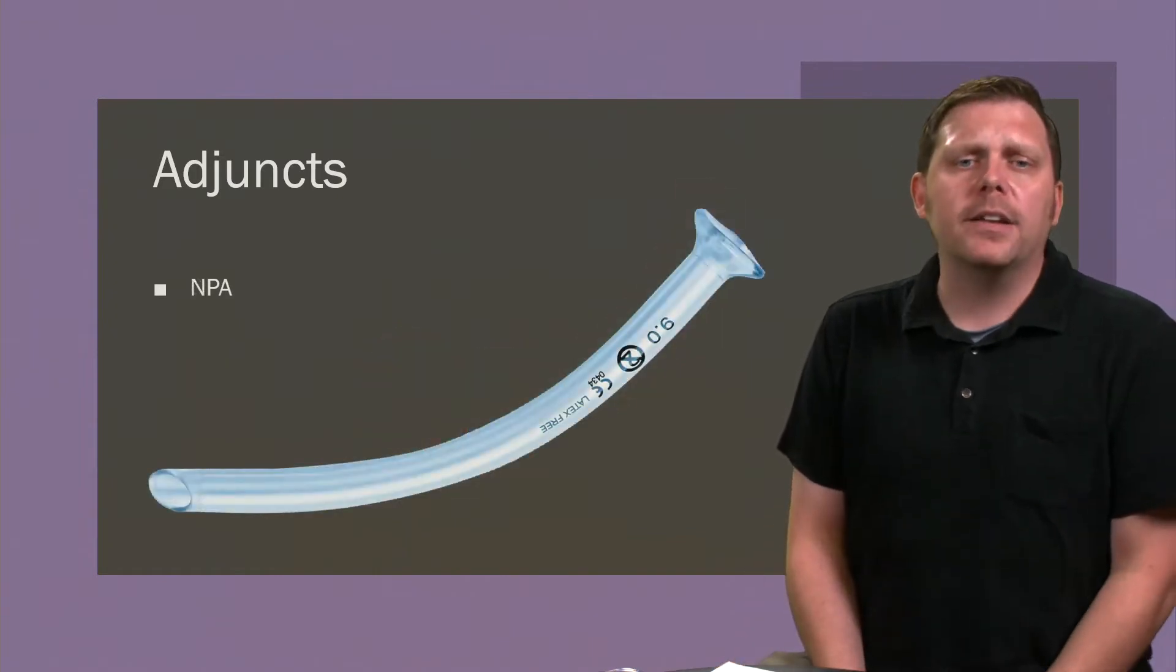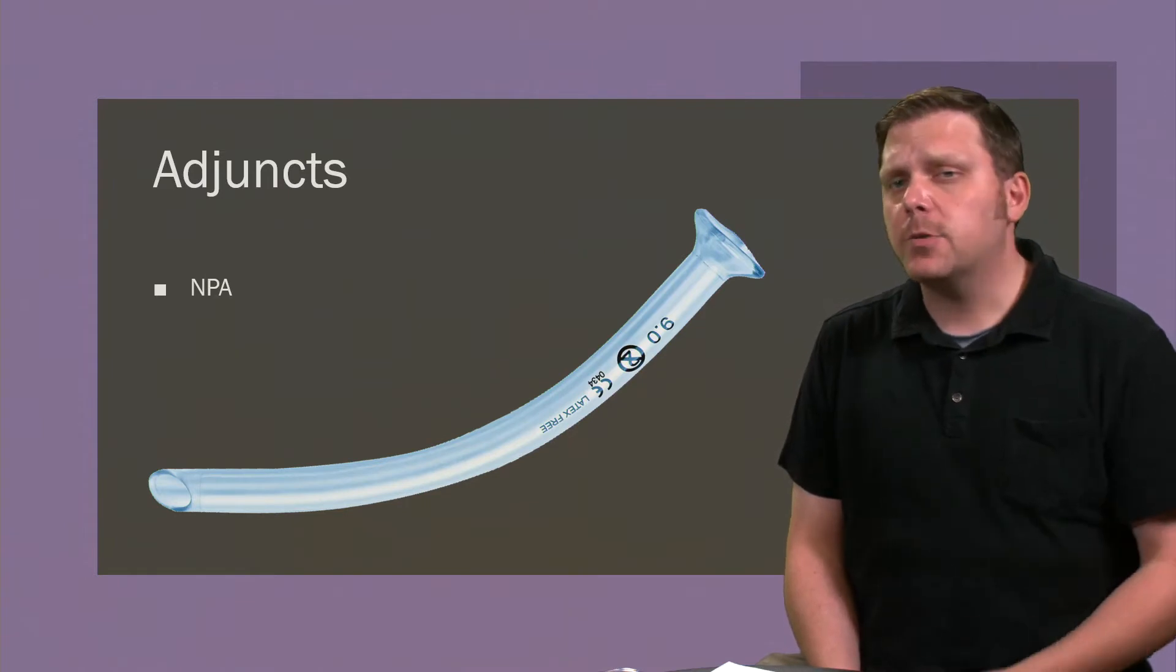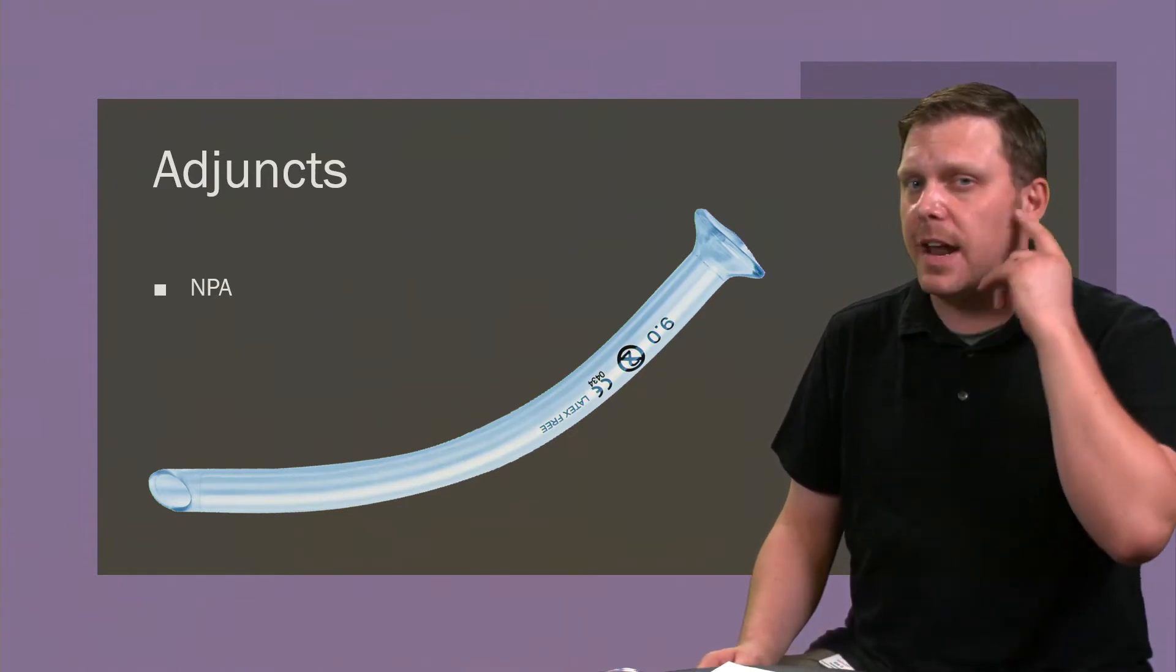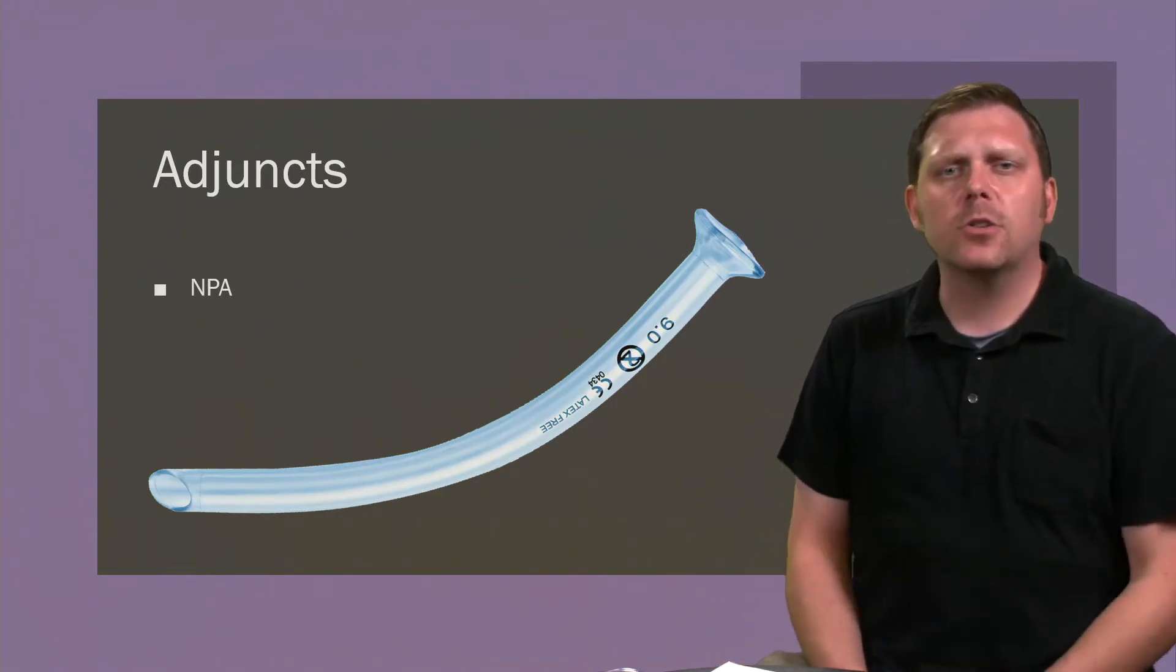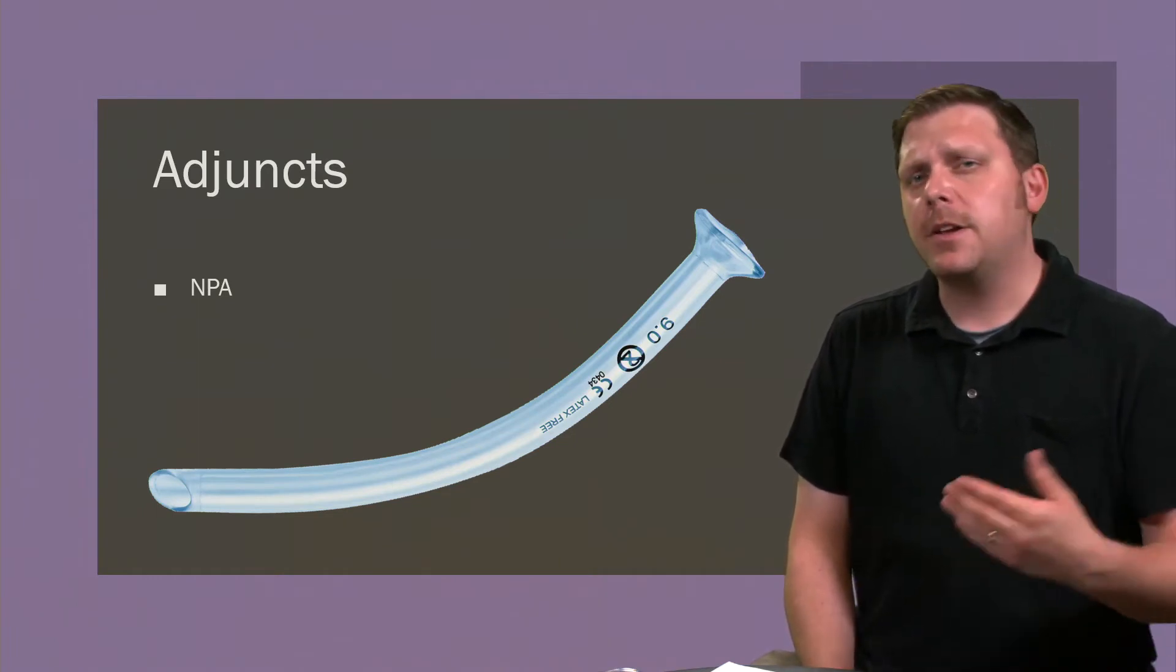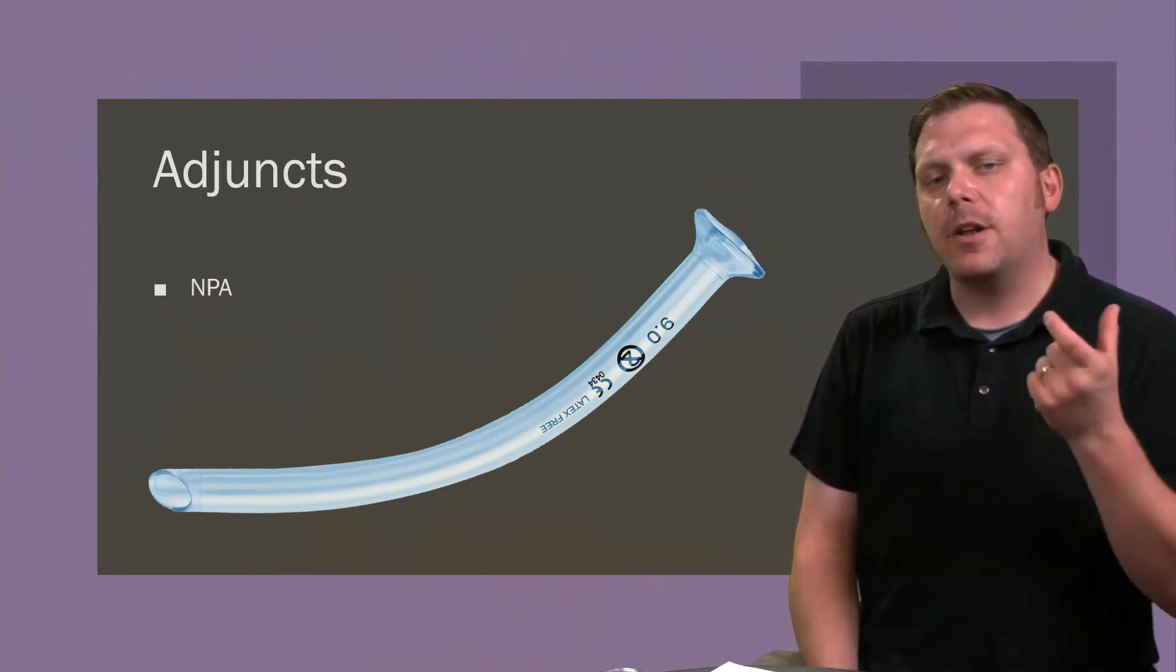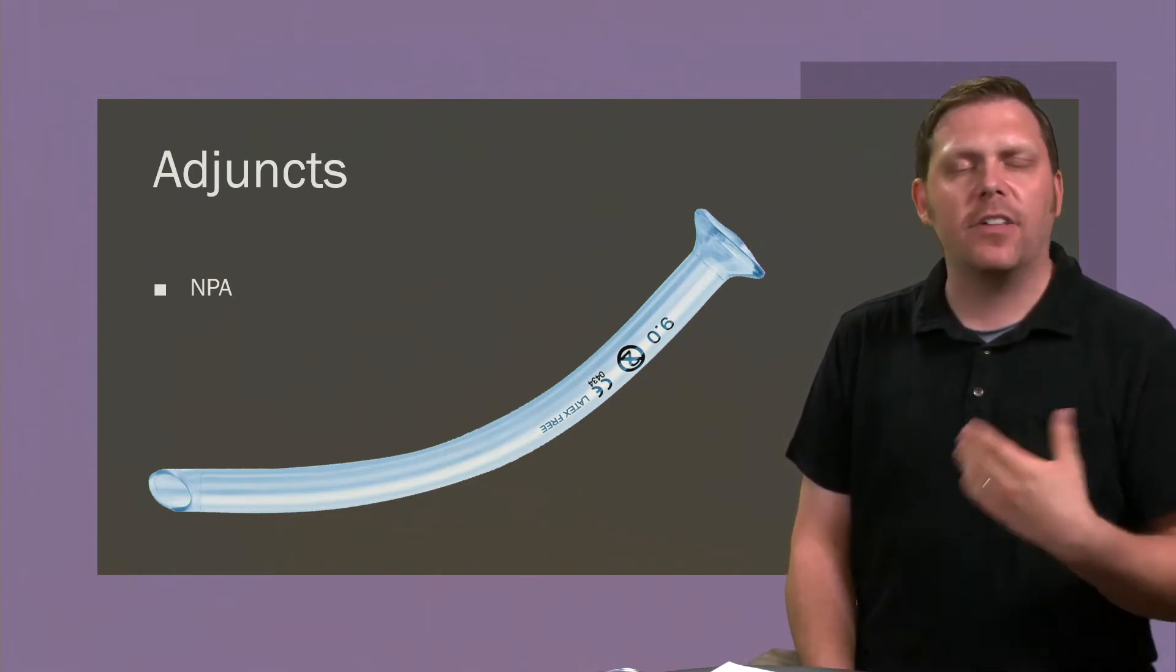If we want to go on from OPA, we can instead put in an NPA, nasopharyngeal airway. With these, we're going to be measuring from the opening of the nare to the tip of the ear. When we administer these, we typically start with the left nostril, but you can go left or right depending on patient needs. And we're going to be going to one of these immediately if we notice that the oral has a gag reflex of any sort. This will bypass that gag reflex.